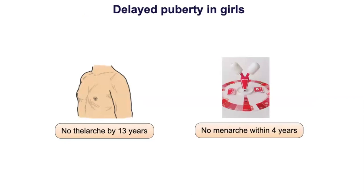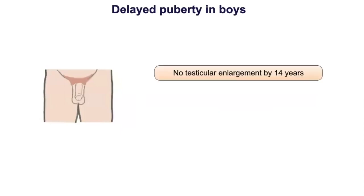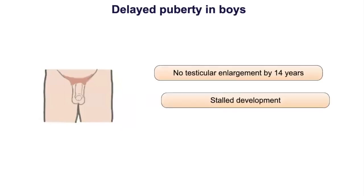No menarche within four years after the onset of thelarche is also considered delayed puberty in females. Delayed puberty in boys is defined as no testicular enlargement by 14 years. Stalled puberty — where after initial pubertal development there is no subsequent testicular progression — is also a type of delayed puberty and strongly argues against a diagnosis of constitutional delay of growth and puberty (CDGP).